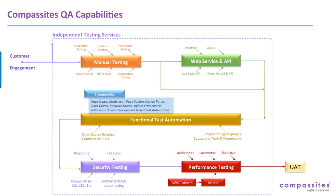For performance testing, we predominantly use JMeter and Amazon as a platform to generate load on the application, to ensure that it is designed to support the anticipated loads. We also use BlazeMeter as a platform, which can be effectively used to do performance testing against the application.